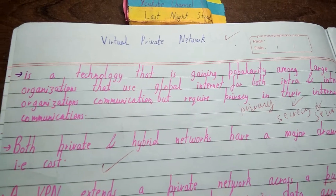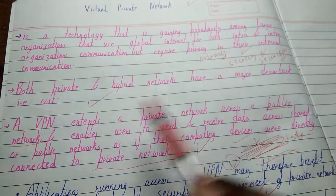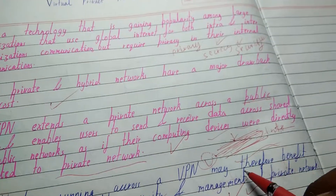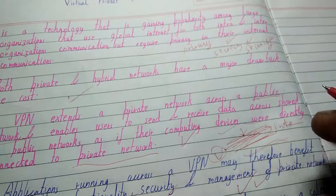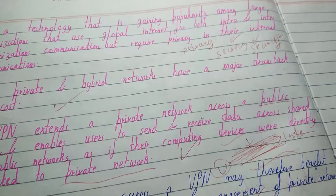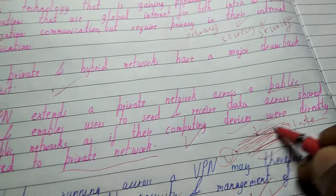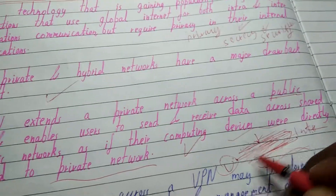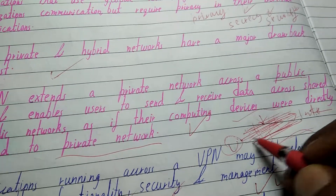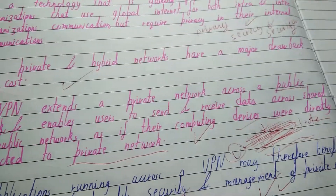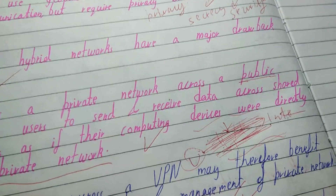A VPN extends a private network across a public network. You can think of the public network as the outer layer and the VPN as a tunnel inside it. VPN creates an encrypted tunnel within the public network, and whatever data is sent cannot be hacked or leaked. The data stays inside this tunnel only, making the user feel that they are communicating in a private network.